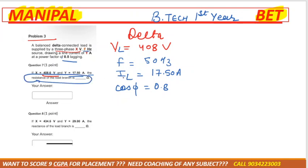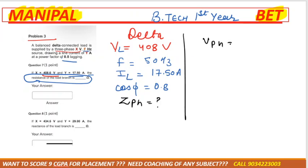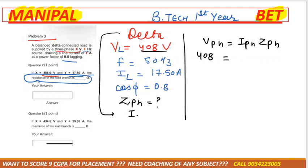We need to calculate the resistance of the load branches, so we need to find impedance ZPH. In delta connection, VPH equals IPH × ZPH, where VPH is 408 volt. The relationship of current in delta is IPH = IL / root 3, from which we can get ZPH.